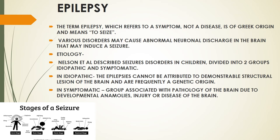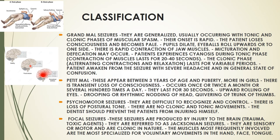Nelson et al. divided the etiology of epilepsy into two types: idiopathic and symptomatic. Epilepsy is classified into four types: grand mal seizures, petit mal, psychomotor seizures, and focal seizures. Grand mal is generalized epilepsy where the whole brain is affected, while focal seizures affect only a part of the brain. Grand mal seizures occur with tonic and clonic phases — tonic involves generalized stiffening and clonic involves jerky, uncontrolled movements of the body.